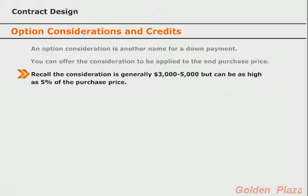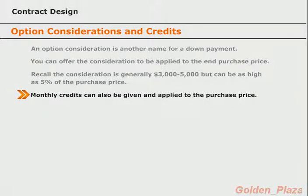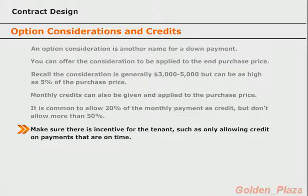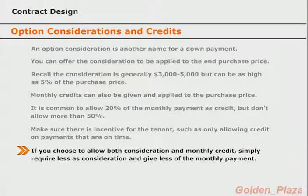A second way to help your tenant buyer is to offer them monthly credits toward the property purchase price. It is common to allow 20% of the monthly rent as credit towards the final purchase, but make sure you don't allow more than 50% of your monthly cash flow as credit. Also, make sure there is some incentive for the tenant buyer — for example, only give the credit for months that they pay on time or by a certain day of the month. If you choose to allow the option consideration to go toward the final purchase price and you offer monthly credits, then require a little less up front and allow a little less per month, so you can still maintain a strong profit margin while helping your tenant buyer.